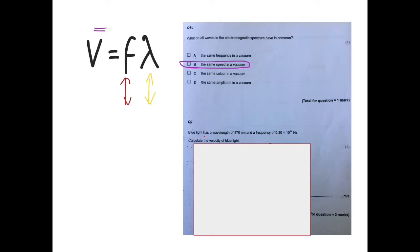It says, blue light has a wavelength of 470 nanometers and a frequency of 6.30 times 10 to the 14 hertz. Calculate the velocity of blue light. Now, firstly, remember, velocity is frequency times wavelength.